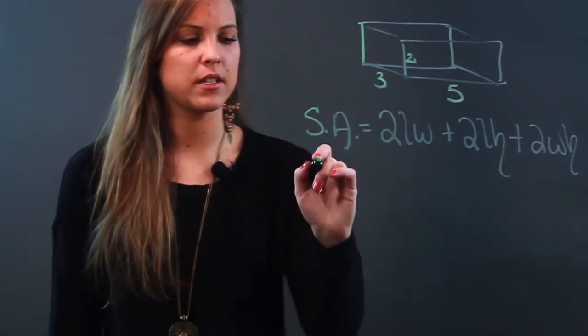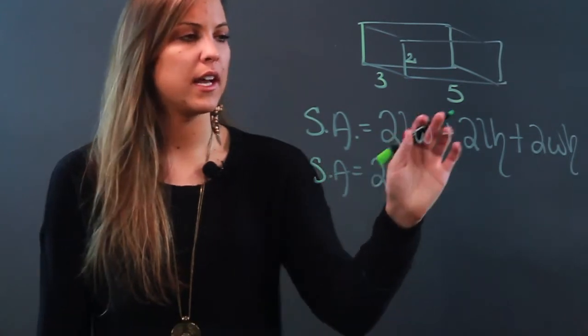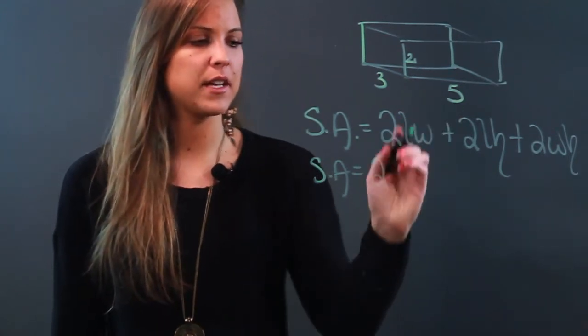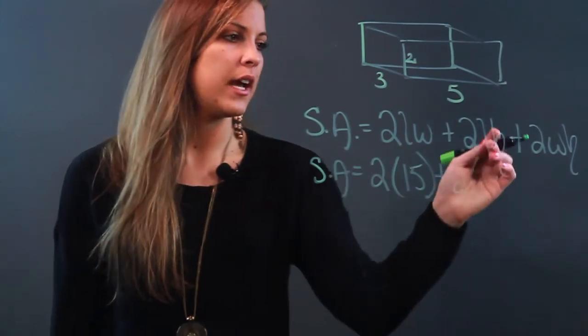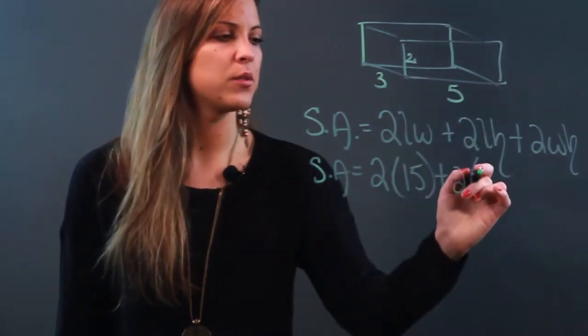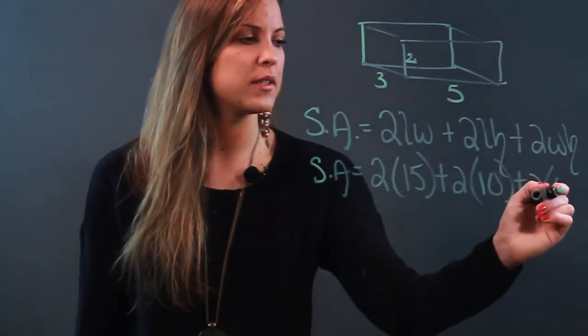We're going to go ahead and substitute things in now. So I have surface area equals 2 times length times width, so we have 5 times 3 is 15, plus 2 times length times height, so we have 5 times 2 is 10, and 2 times width times height, which is 3 times 2 is 6.